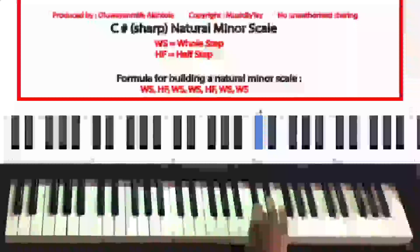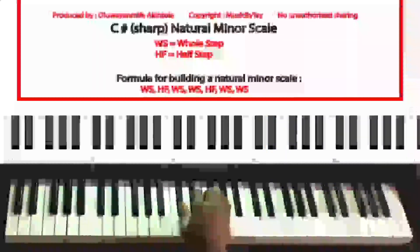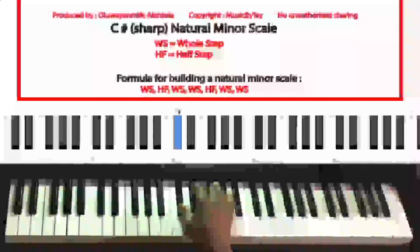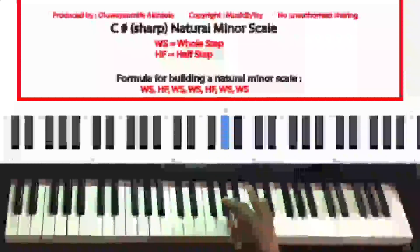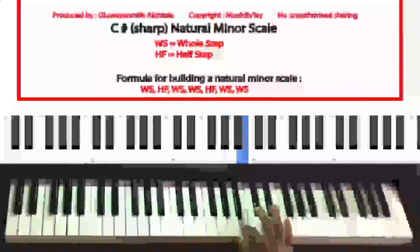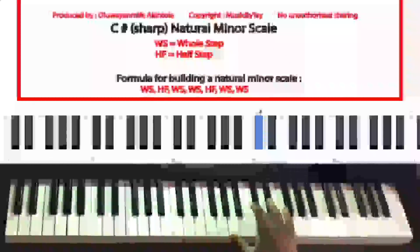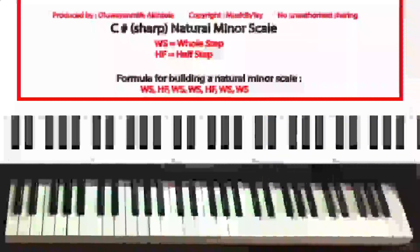So let's do that. Starting from the key of C sharp, we are going to play the E major scale starting from C sharp and finishing at C sharp. And that is the C sharp natural minor scale.